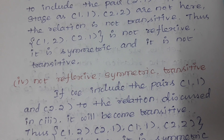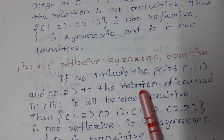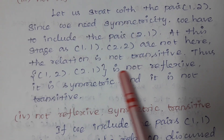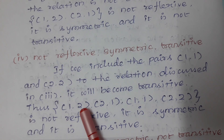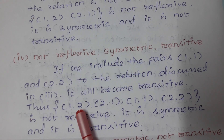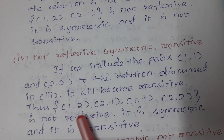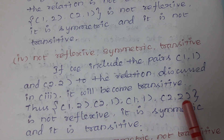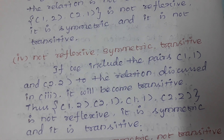Therefore we can write: {(1,2),(2,1)} is not reflexive, it is symmetric, and it is not transitive. Next, not reflexive but symmetric and transitive: if we include the pairs (1,1) and (2,2) to the relation {(1,2),(2,1)}, then (a,b) and (b,c) give (a,c), so it becomes transitive. So {(1,2),(2,1),(1,1),(2,2)} is not reflexive, is symmetric, and is transitive.